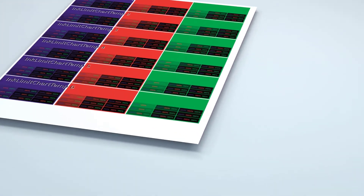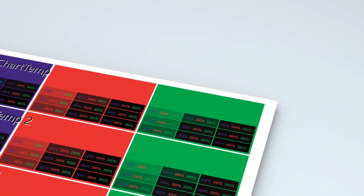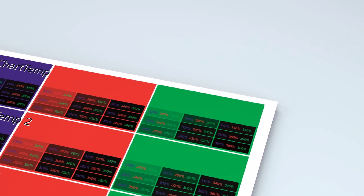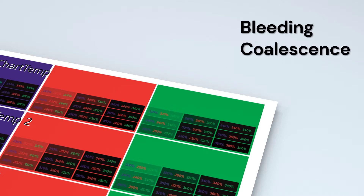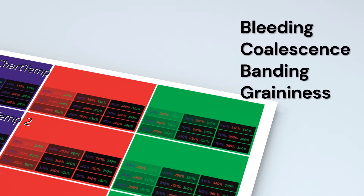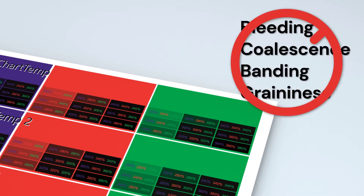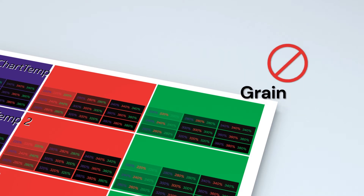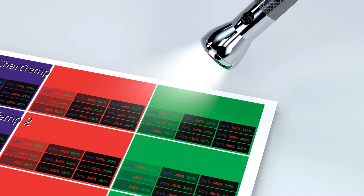The aim is to get the deepest colors without sacrificing quality and over-inking. Bleeding, coalescence, banding, and graininess are things you want to avoid. Using a flashlight or your phone light will help you get a better look at your color output and is highly recommended when ink limiting.